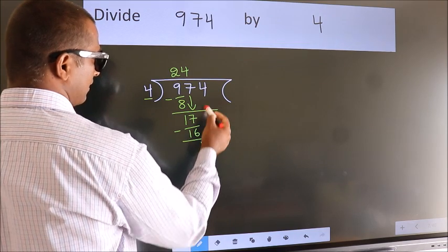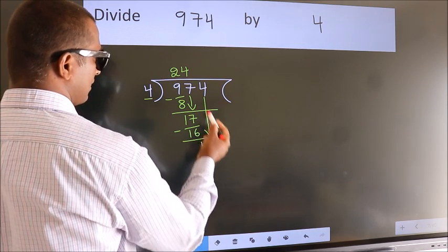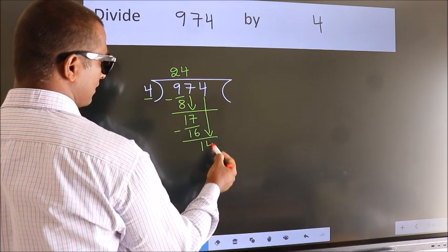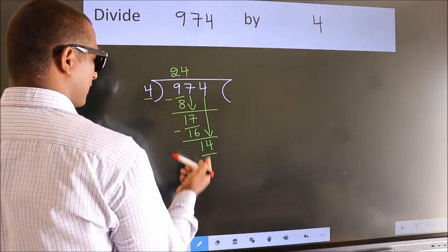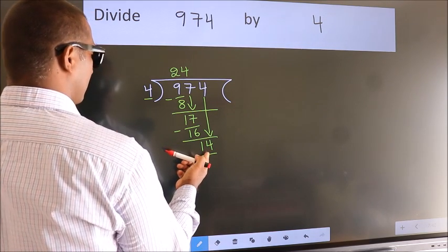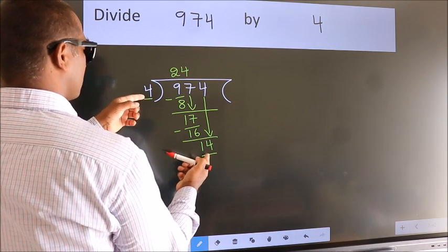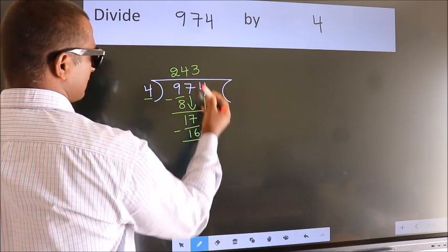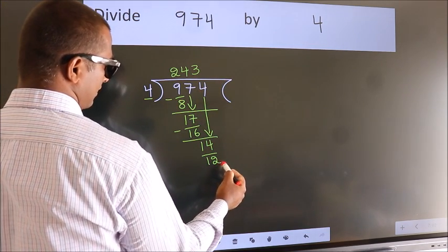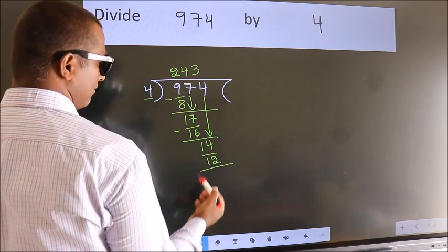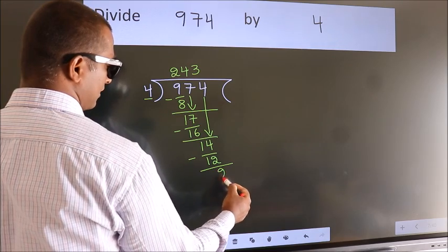After this, bring down the beside number. So 4 down. So 14. A number close to 14 in 4 table is 4 3s, 12. Now we subtract. We get 2.